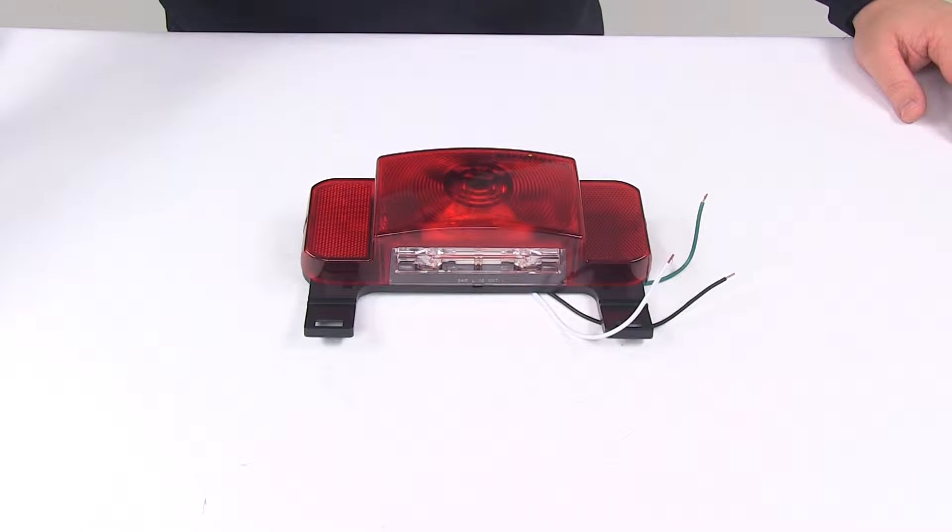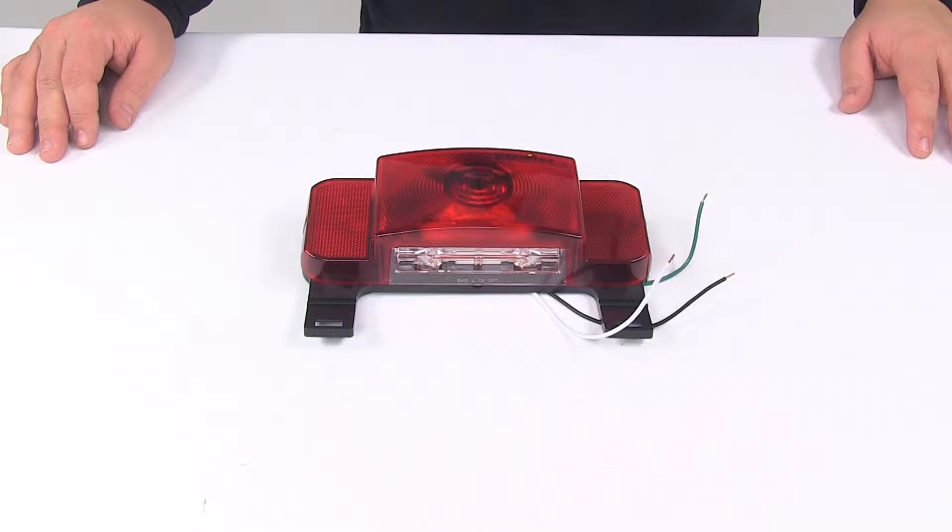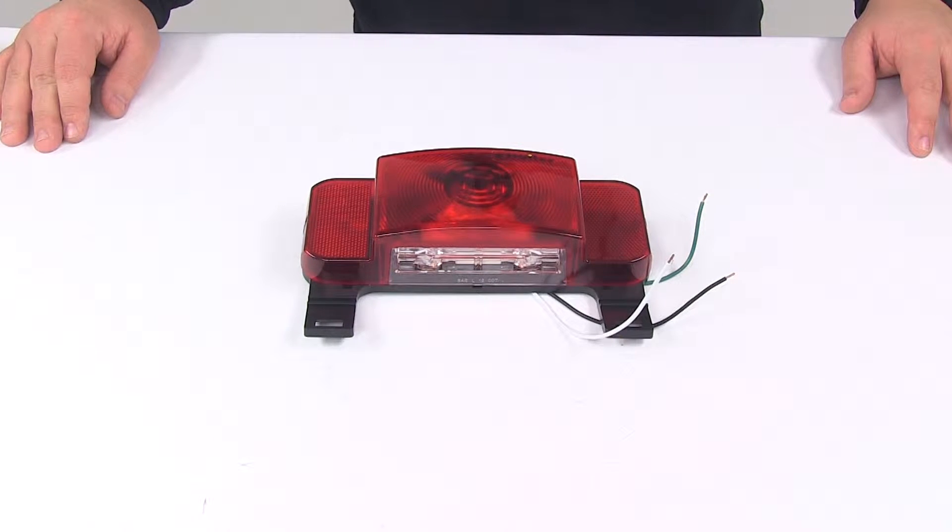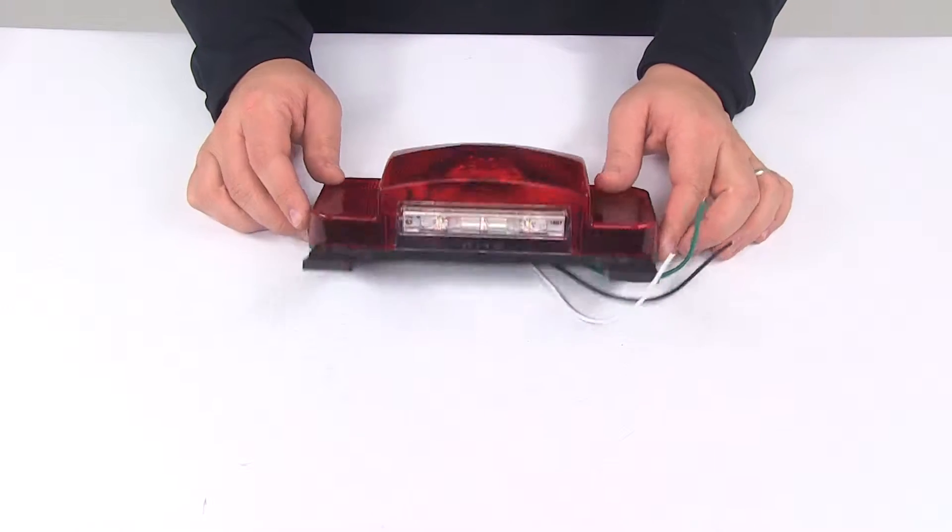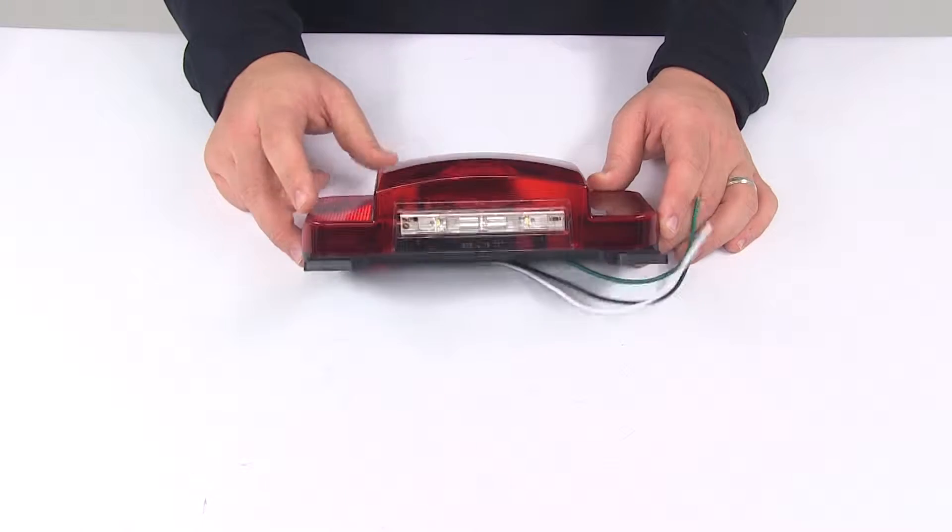Today we're going to be taking a look at the Optronics One LED RV taillight for the driver's side of your RV. The rectangular RV taillight serves four functions: stoplight, taillight, turn signal light, and on the bottom we have the license plate light.